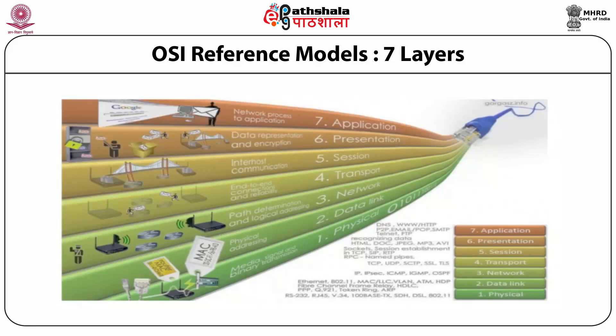The application layer passes data to the presentation layer, where data is represented in a particular format. If encryption is required, that is also done — all formatting is done at the presentation layer. From there it goes to the session layer. Between inter-communication, there should be an inter-host communication channel, and that is established at the session layer. Up to this point, it is only application and data.